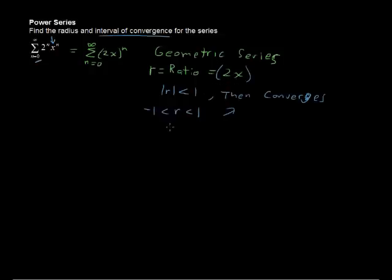So what we're going to do is plug in 2x for r and solve this compound inequality, and that will give you the interval of convergence. Let's do that. Plug in negative 1 is less than 2x is less than 1. Divide by 2, so you have negative 1 half is less than x is less than 1 half.